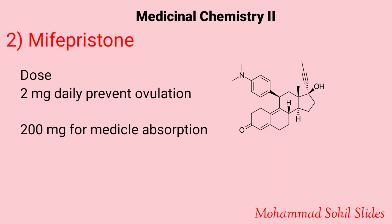The mode of action of mifepristone is that it acts as a competitive progesterone receptor antagonist — it is an anti-progestogen. It works by blocking the effect of progesterone, making the cervix easier to open and promoting contraction of the uterus when exposed to misoprostol. Side effects include abdominal pain, fatigue, vaginal bleeding, and birth defects if the pregnancy does not end. The dose is 2 mg daily to prevent ovulation and 200 mg for medical abortion.